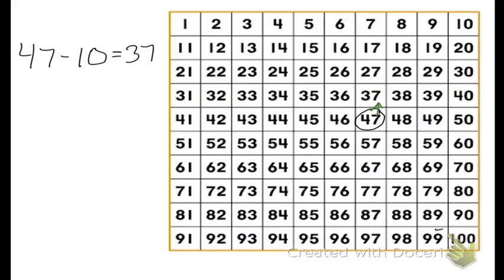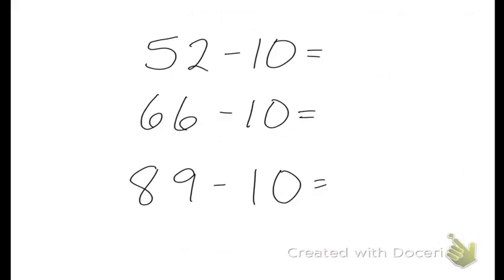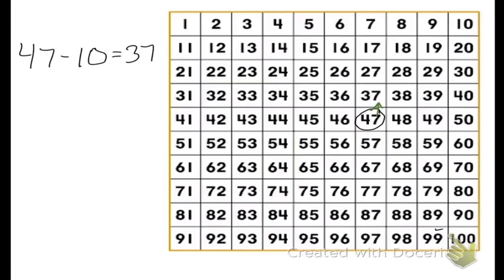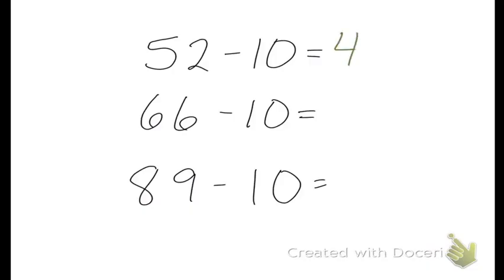We'll be looking at more base 10 blocks in our live session. Let's try 52 minus 10. So I'm going to go ahead and circle 52. And if our pattern stays true, then the answer will be one row above. 42.